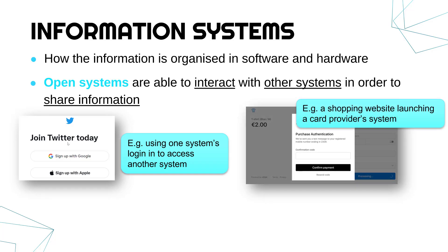Another similar example is when you go to buy something on a website — often it will launch another page, maybe by the card provider like MasterCard or Visa, or maybe even your bank, to verify that it's you and make it more secure. So information is being shared between the company you're buying from, your bank, and maybe the card provider as well. Those are clear examples of sharing between obviously separate systems.